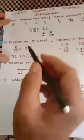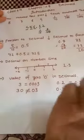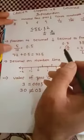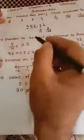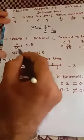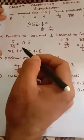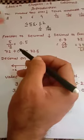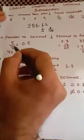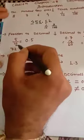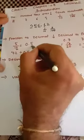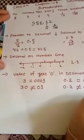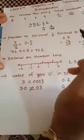Now let's move to the next topic: fraction to decimal. How can a number be converted from a fraction to a decimal? Suppose you want to convert 5/10 into a decimal. If any number has 10, 100, or 1000 in its denominator, we simply put the decimal point after counting how many zeros there are. Here, the denominator is 10, so we put the decimal after one digit, giving us 0.5.